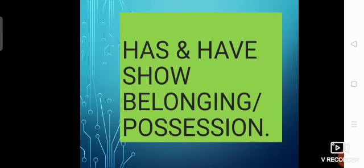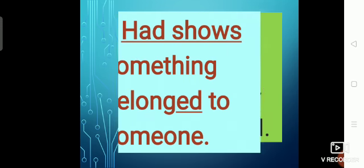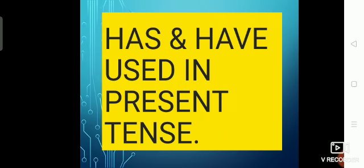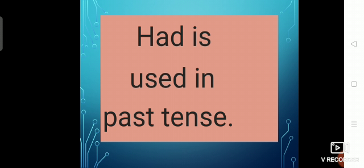Has and have show belonging or possession. They show that something belongs to someone. Has and have are used in present tense. Present tense is when we are talking about the present time. Had is used in past tense — that is the time which has gone.